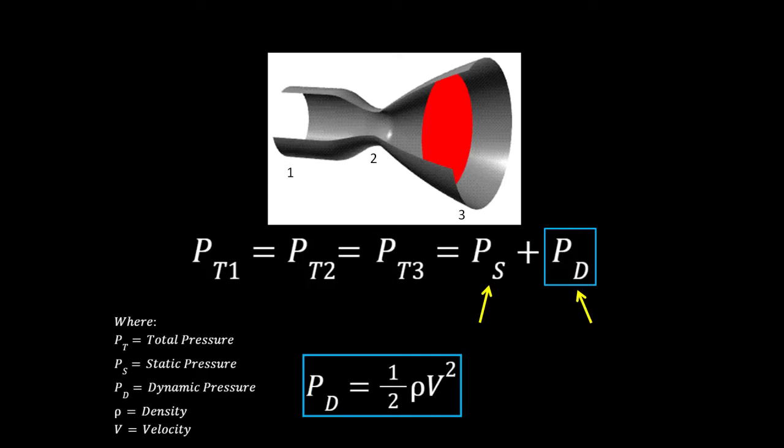The dynamic pressure can be thought of as the kinetic energy of the air but for us what we're really interested in doing is building up as much static pressure on the inlet side of the radiator and dynamic pressure on the outlet side. This will help to increase the mass airflow through the radiator.